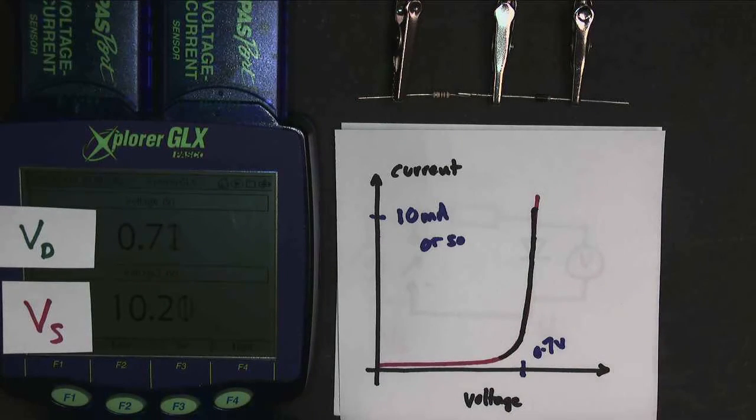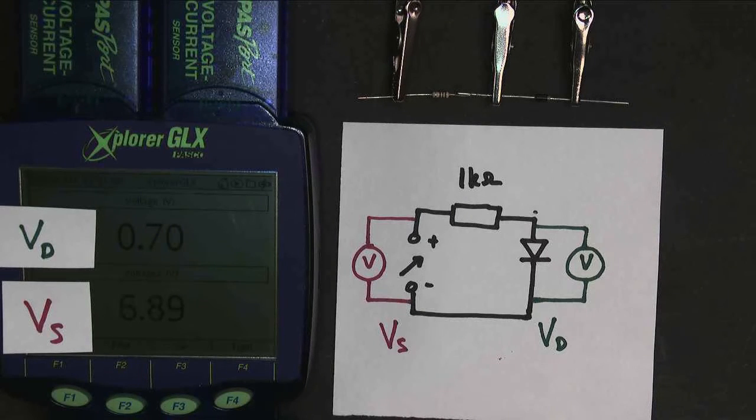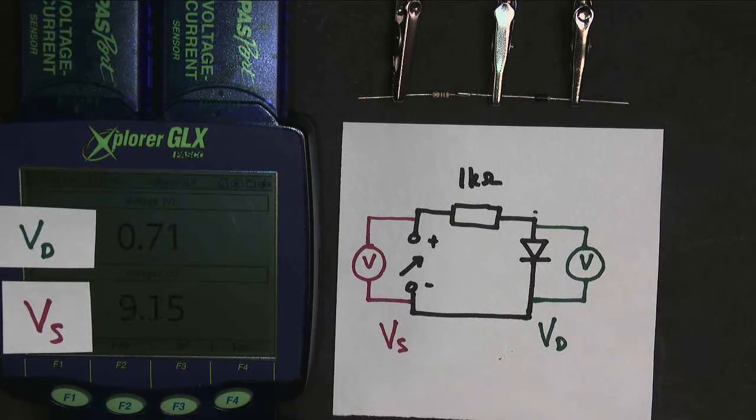So that means that in this circuit, even though my input voltage changes dramatically, my output voltage—the voltage across the diode—stays almost fixed. It's a fixed voltage reference, which would be very useful in a comparator circuit or something like that.